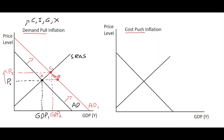On the right-hand side we have cost-push inflation. We still have our equilibrium point where the short-run aggregate supply curve intersects our aggregate demand curve, giving us an initial price level P1 and starting GDP level GDP1.